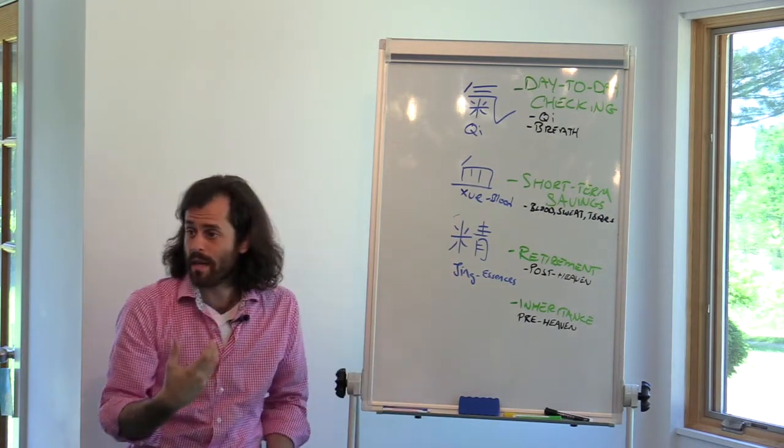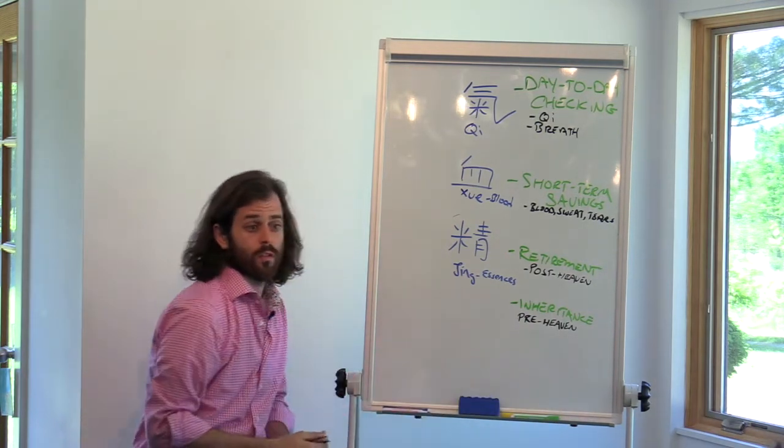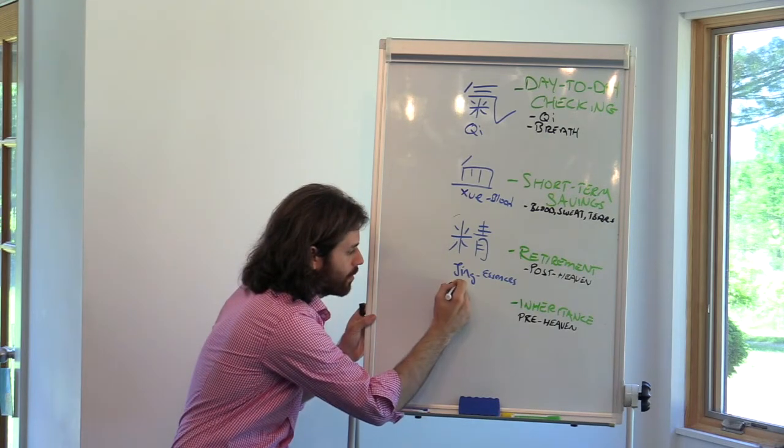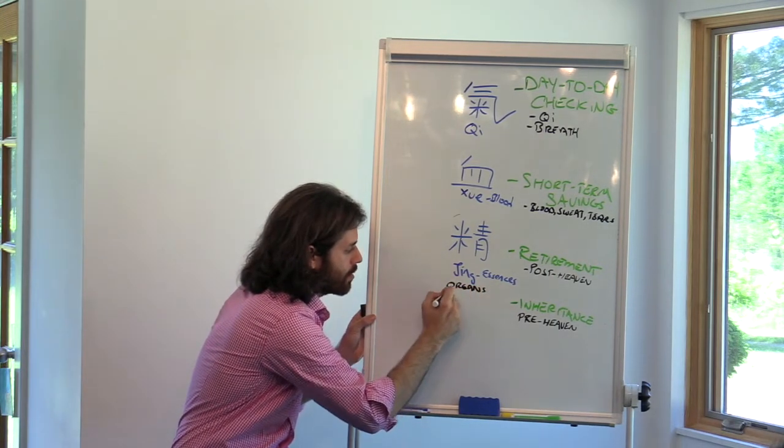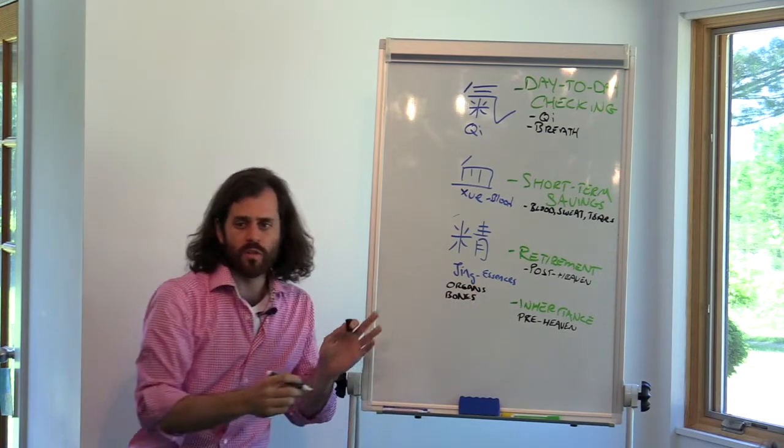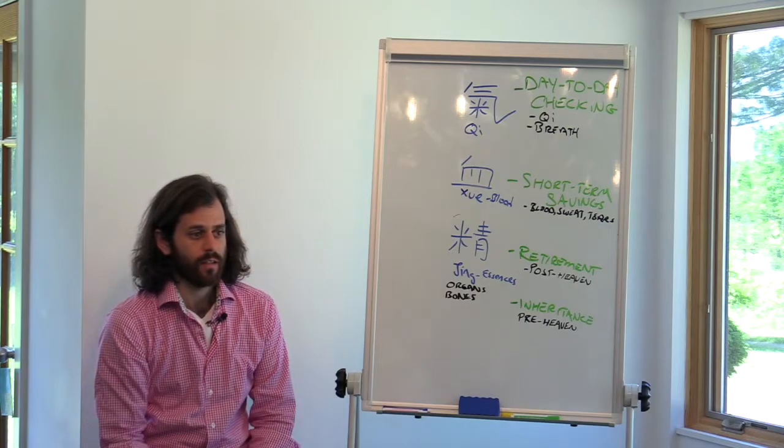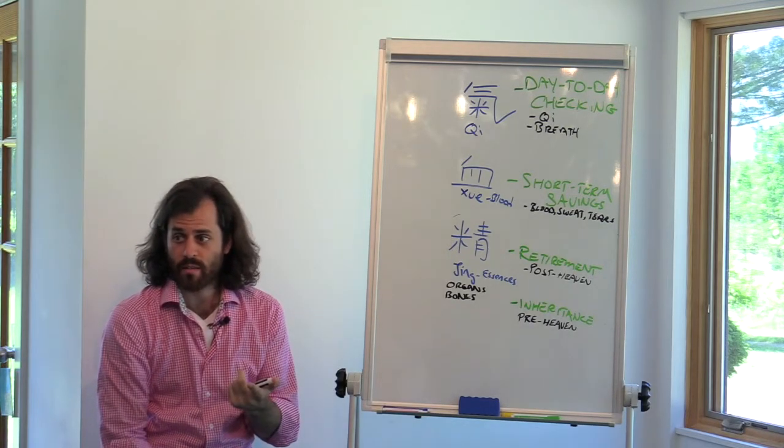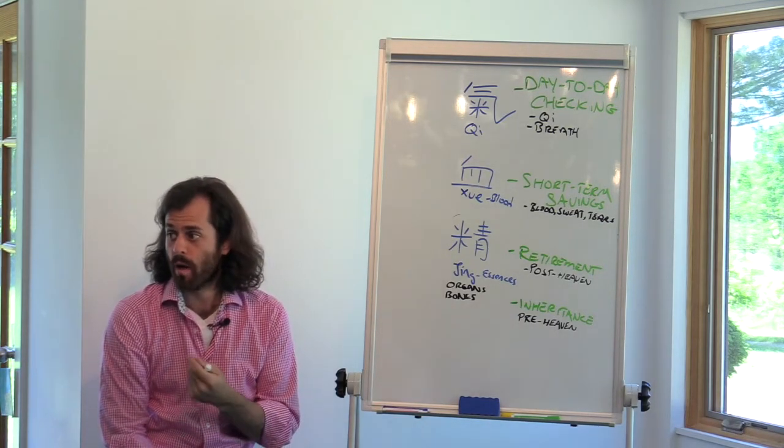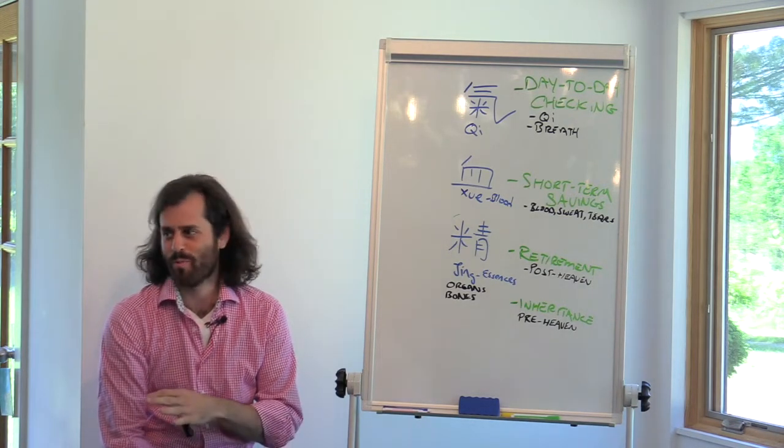And, jing and essences, we did the meditation. What was the level of that? What was it too? Organs. Organs and bones. Organs, bones. These are deep, precious things in your body that if you break or disease your bones or your organs, it's a what? It's a big problem. Is it a little problem? Probably not.